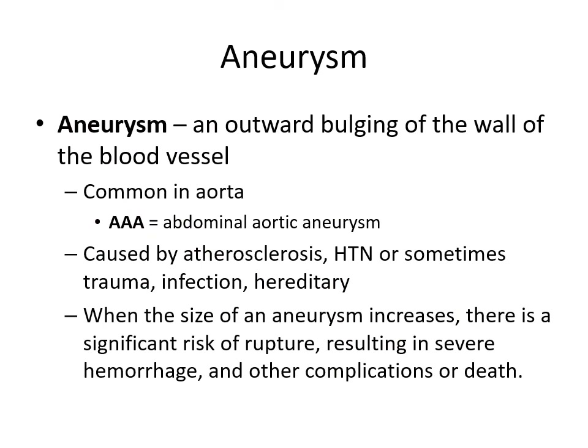Now we'll talk about aneurysms — an outward bulging of the wall of the blood vessel. This is common in the aorta, known as an abdominal aortic aneurysm, which is incredibly dangerous. It can be caused by atherosclerosis, hypertension, or sometimes trauma, infection, or a hereditary issue. When the size of the aneurysm increases, there's a significant risk of rupture resulting in severe hemorrhage and other complications, including death. The biggest issue with an abdominal aortic aneurysm is that if it ruptures, getting someone into surgery fast enough becomes a very real problem.